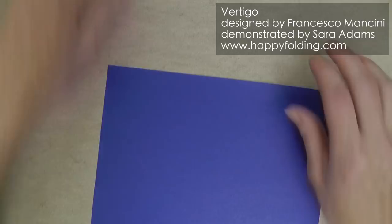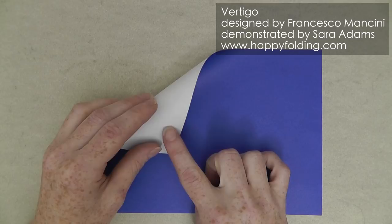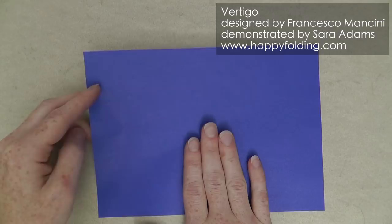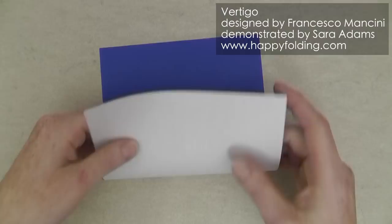We're going to start with the color side up, and the reverse of the paper will not show. I'm only using paper that is white on one side so that you can more easily see the steps. Now, we're going to fold in half, edge to edge, and make a strong crease.